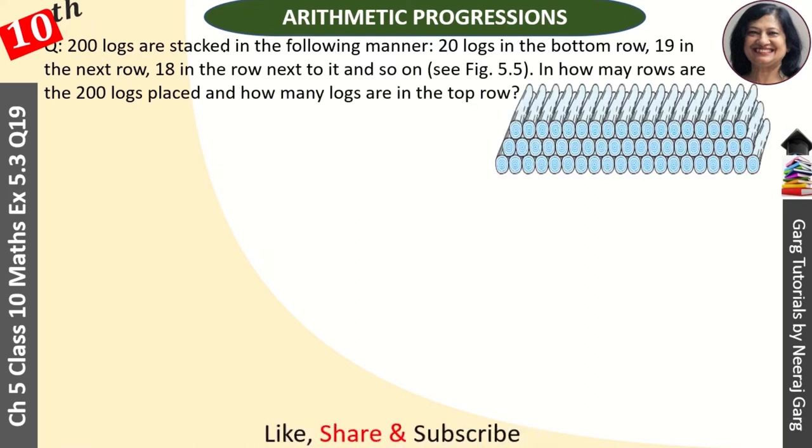200 logs are stacked in the following manner: 20 logs in the bottom row, 19 in the next row, 18 in the row next to it and so on. See figure 5.5. In how many rows are the 200 logs placed and how many logs are in the top row? So we have total number of rows and how many logs are in the top row.